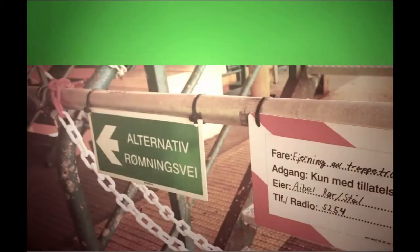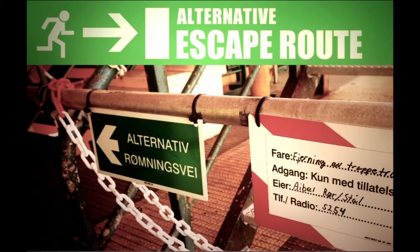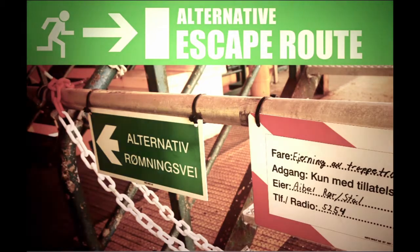If the access control measure is a physical obstacle in an escape route, the alternative escape route must be described and clearly marked.